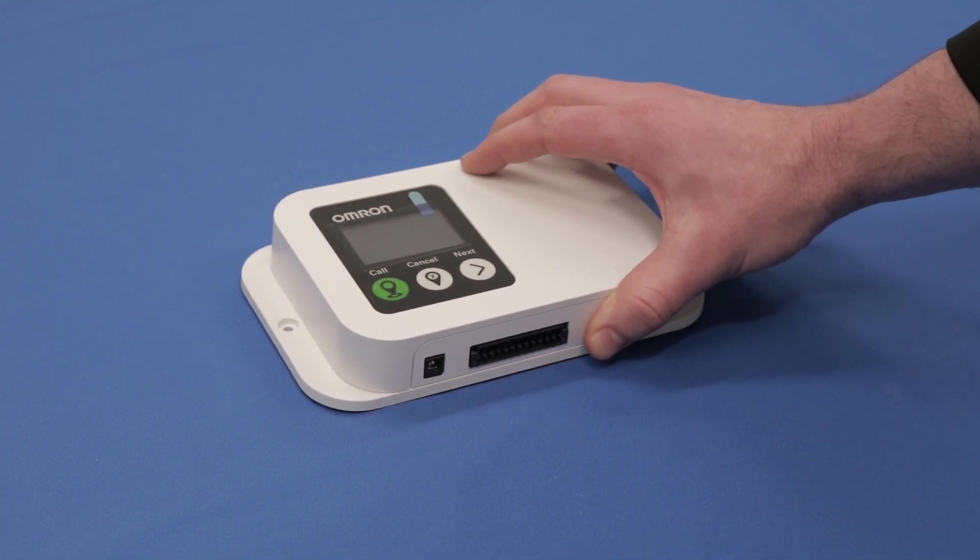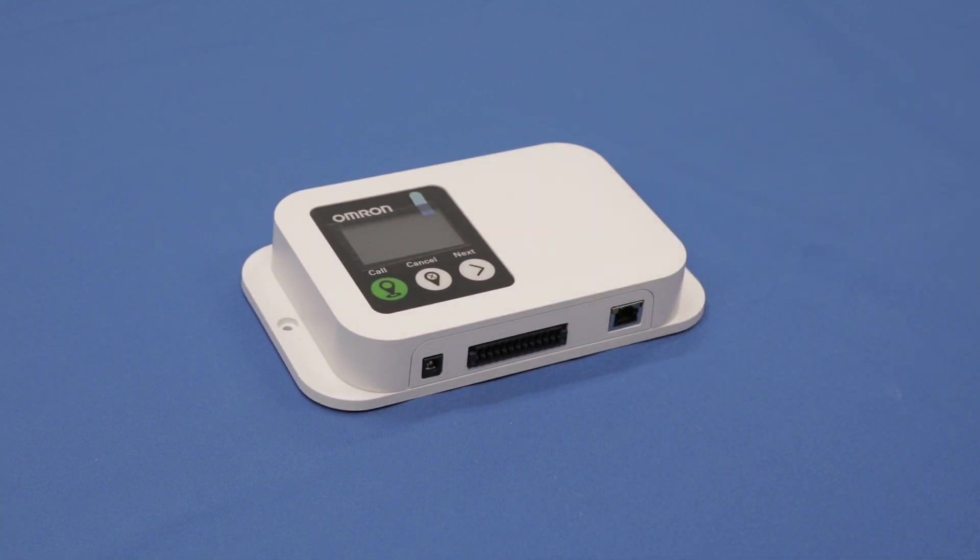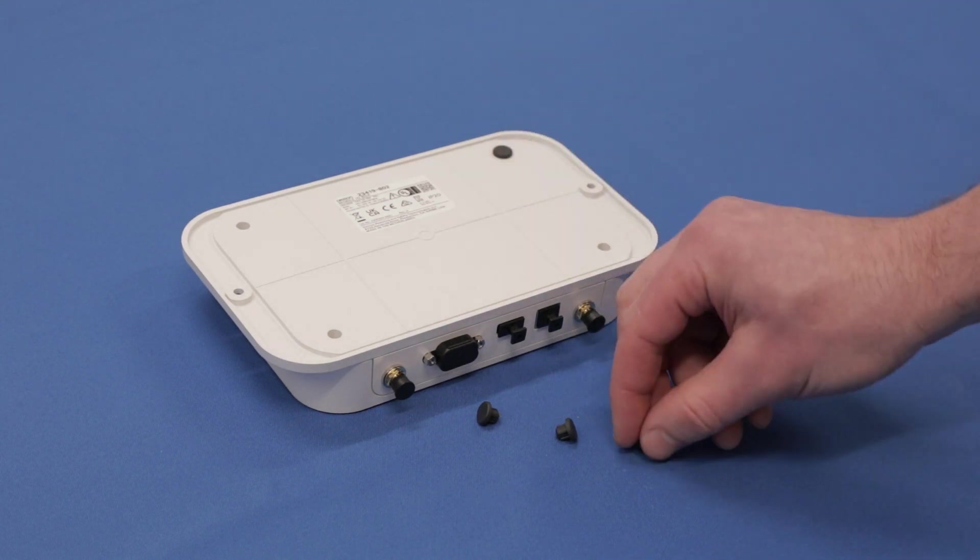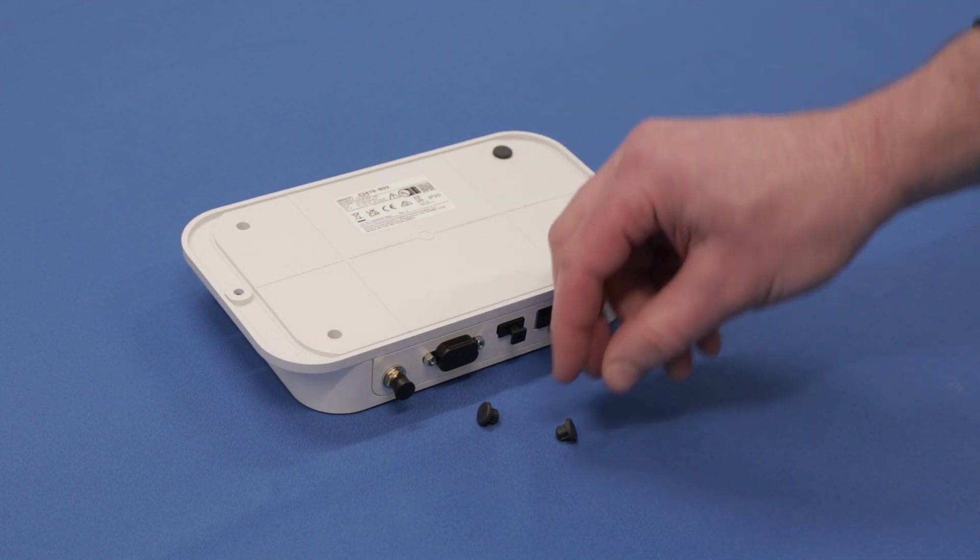The Mobile I.O. Box can be placed on a horizontal flat surface without fixation. Mount the 4 rubber feet by pressing them inside the holes at the backside of the Mobile I.O. Box.